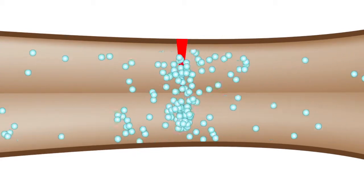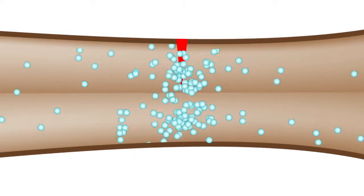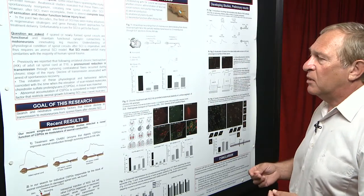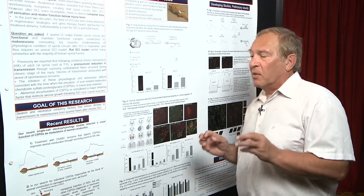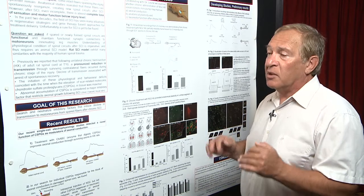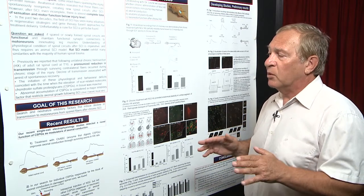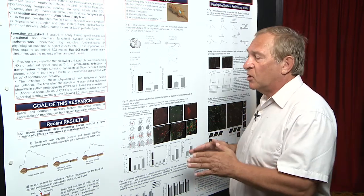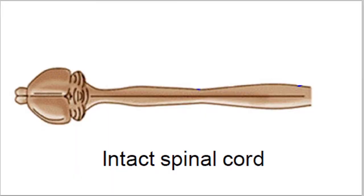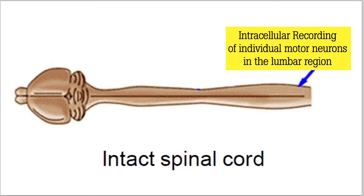In our studies, we decided to examine if CSPGs, whose levels elevated after injury, could block transmission to motor neurons. We recorded intracellularly from individual motor neurons in the lumbar section of the cord, and responses in these motor neurons were evoked by electric stimulation of the descending fibers at the thoracic level.